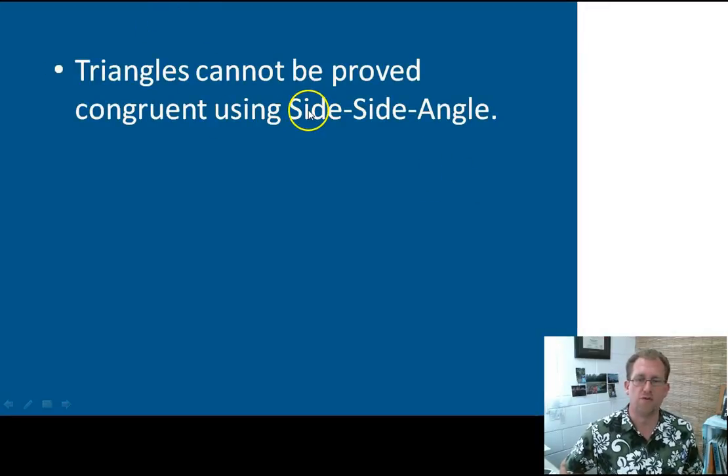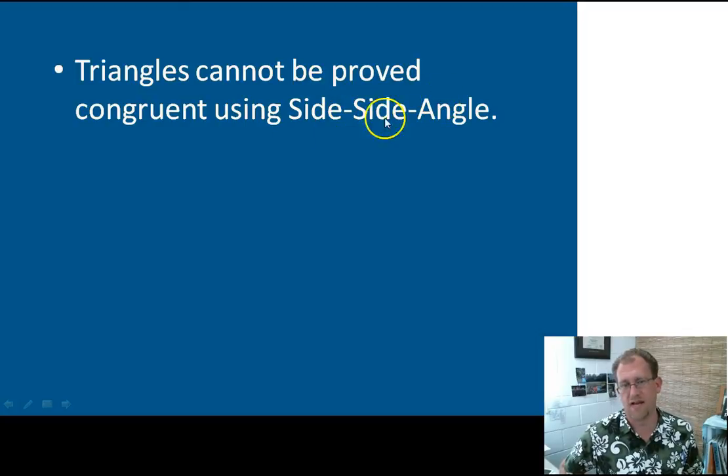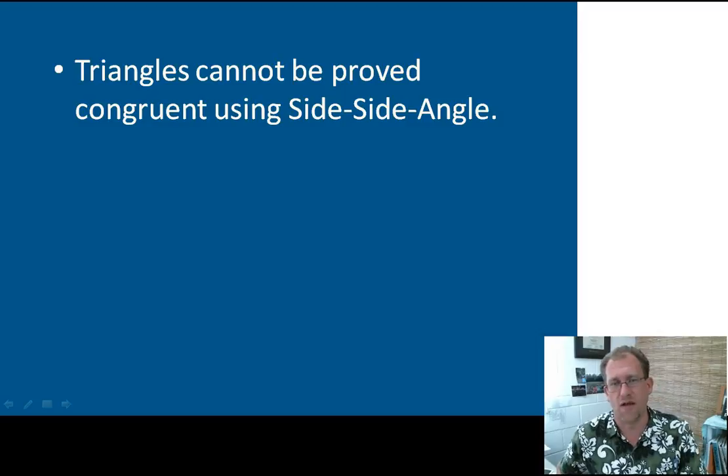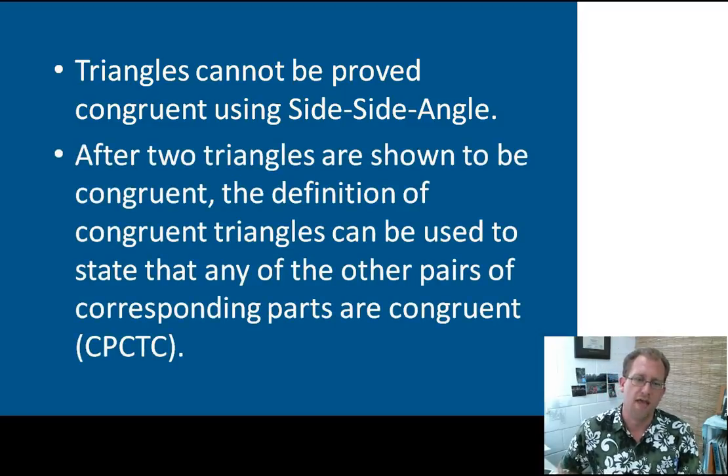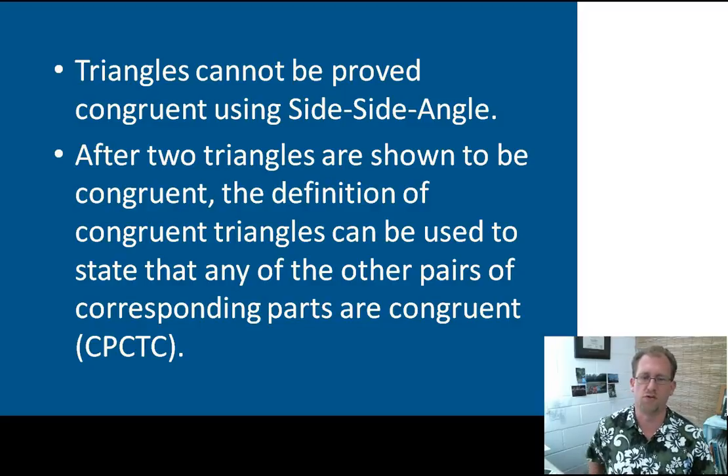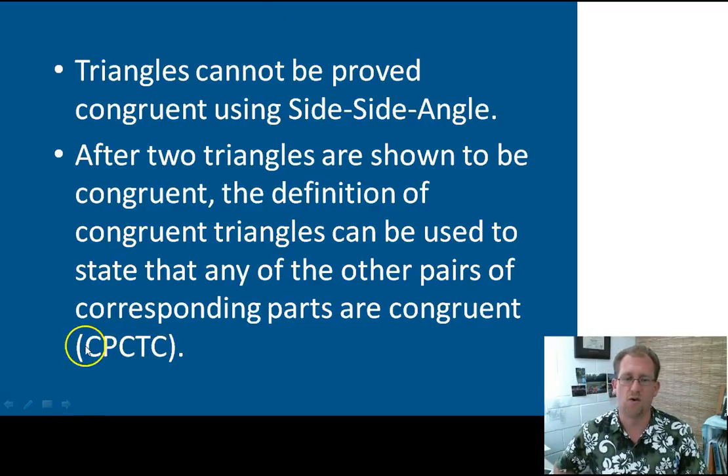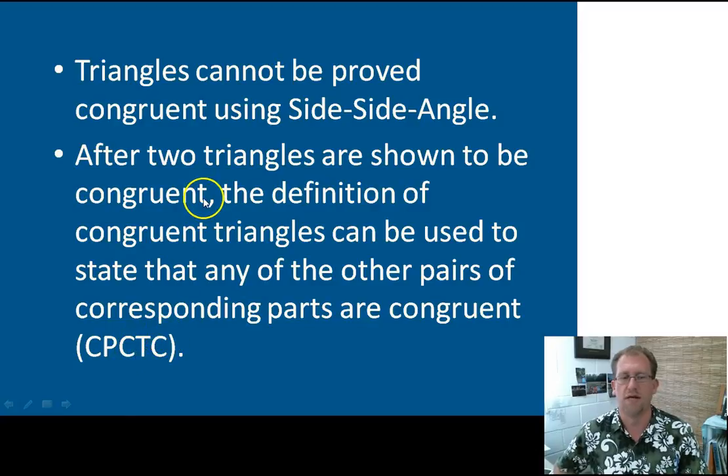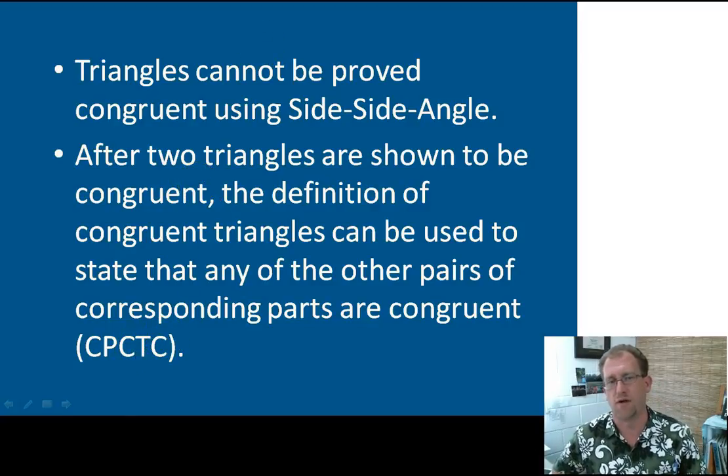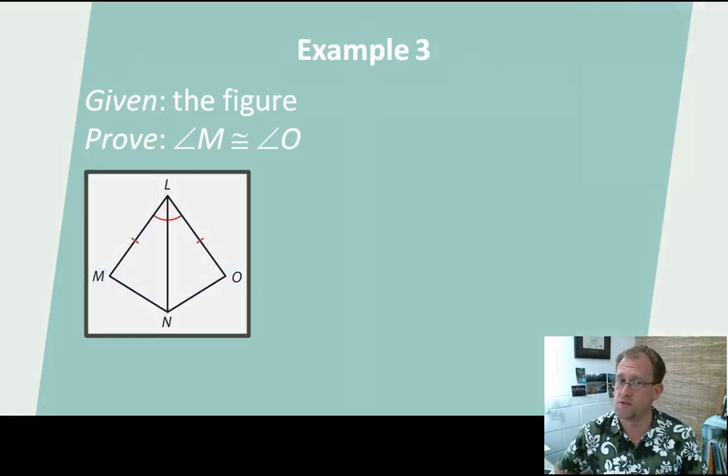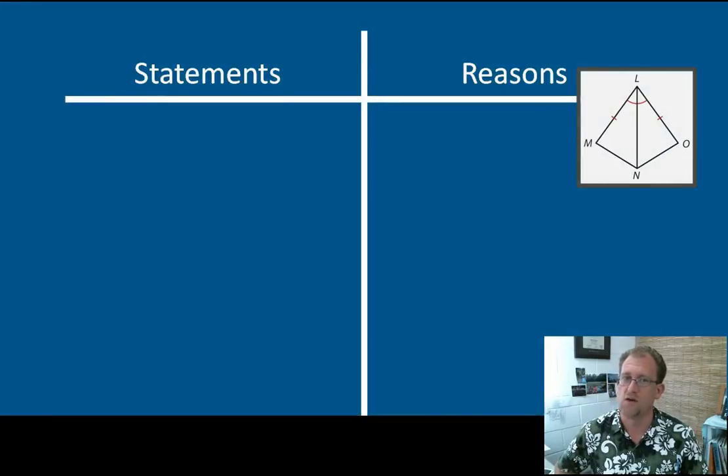Triangles cannot be proved congruent using side-side angle. As I said before, angle-side-side, A-S-S, is a bad word. You can't use that in Christian geometry class. You can't actually use that in any geometry class. So angle-side-side does not work as a congruent statement. After two triangles are shown to be congruent, the definition of congruent triangles can be used to state that any of the other parts of the corresponding parts of the congruent triangles are congruent. So CPCTC, corresponding parts of congruent triangles are congruent. You can do that as soon as you have demonstrated that two triangles are congruent using one of a handful of congruency postulates. You now have two of those congruency postulates in your tool bag.